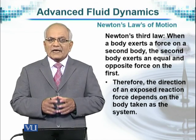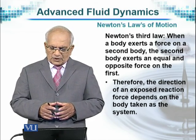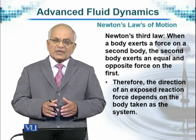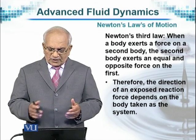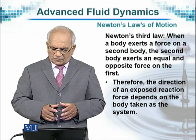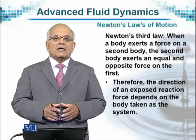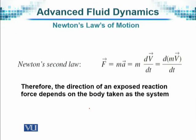Newton's third law: when a body exerts a force on a second body, the second body exerts an equal and opposite force on the first body. Therefore the direction of an exposed reaction force depends on the body taken as the system as a whole. To write it in mathematical terms, F is a force and it is a vector quantity — so it has a direction, and therefore you see an arrow there. Similarly, acceleration is also a vector quantity, and so is velocity, and therefore they appear with a line on top of them.